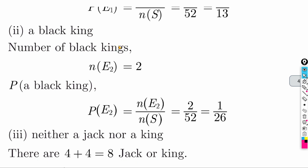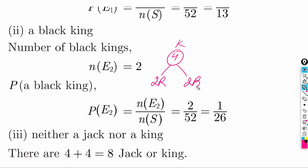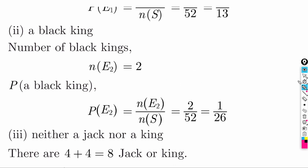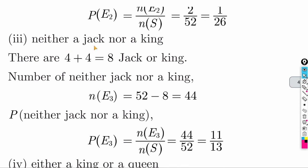Find probability of a black king. Total kings = 4: 2 red and 2 black. Favorable = 2. Answer: 2 by 52. Find probability of neither a jack nor a king. Jacks = 4, Kings = 4, total to exclude = 8. Remaining = 52 - 8 = 44. Answer: 44 by 52.